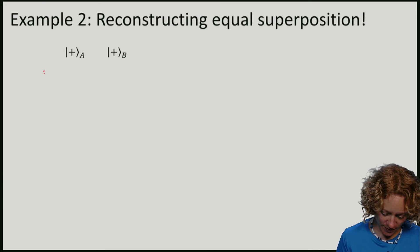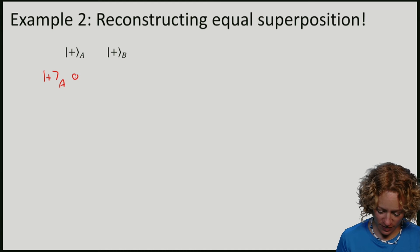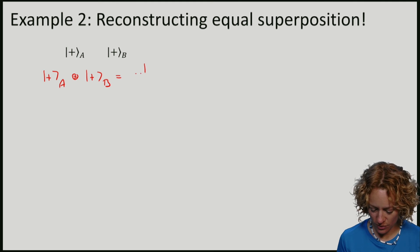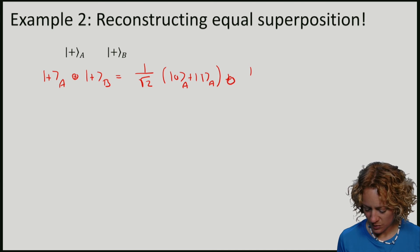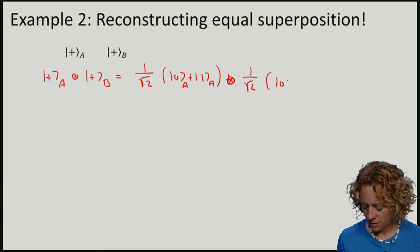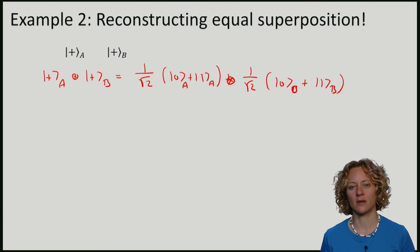Let's remember what these states are. If I take the tensor product, I have 1 over square root 2 times (|0⟩ + |1⟩) on A, tensor 1 over square root 2 times (|0⟩ + |1⟩) on B.